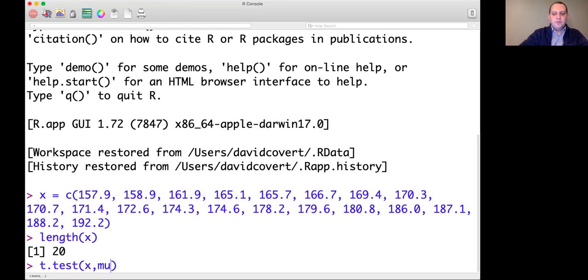We want to check whether or not the data supports whether the mean is 175 or not. Our alternative is 'less', which means the alternative hypothesis is that μ is less than 175. This is all we need to run the test.